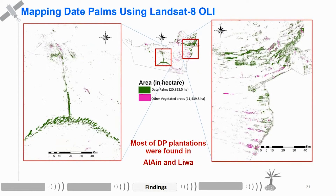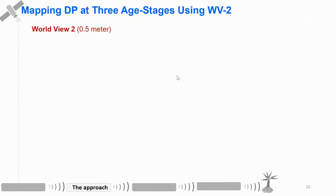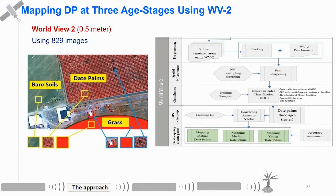Liwa and Al Ain are maybe the most date palm plantation areas in Abu Dhabi. One important thing: Landsat 8 can only depict the mature date palm and failed to depict the non-mature date palm — the medium and young. That's why we used the WorldView image to classify the date palm into three classes: mature, medium, and young. We ran some preprocessing including stacking and pan-sharpening, because WorldView's spatial resolution is 2m, so we ran pan-sharpening to make it sub-meter.